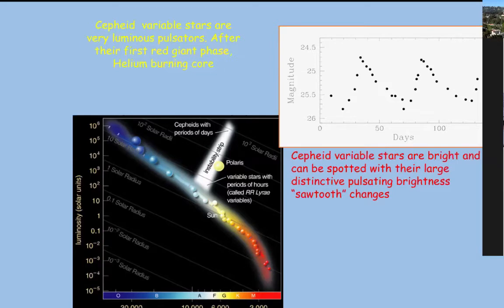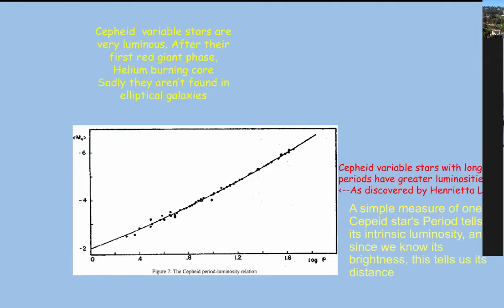Now you see why I'm so into star clusters — they're the homes of Cepheid variable stars and the homes of main sequence distances. That's the only reason I really care about them. Star clusters are interesting for one other reason: the globular star clusters are the homes of the oldest known stars, the first ones to be born in the universe, so they also tell us approximately the age of the universe.